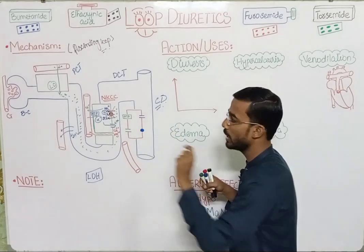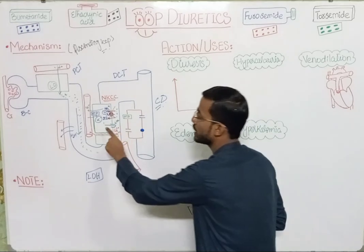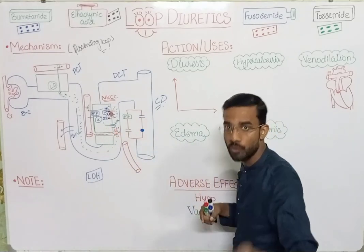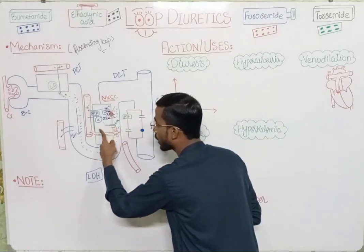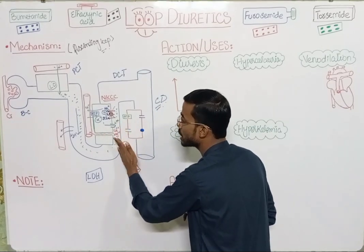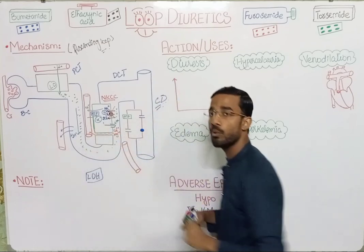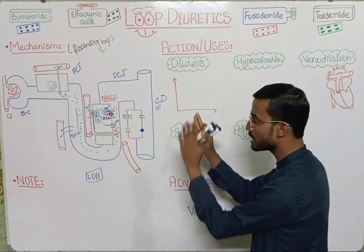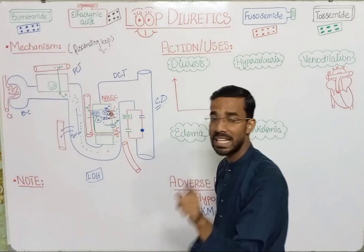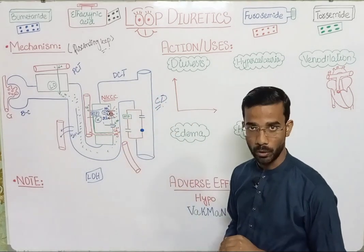When the NKCC transporter is blocked, there is no accumulation of potassium in the cell. If there is no potassium accumulation, potassium will not back-diffuse into the tubule, and therefore calcium and magnesium also cannot move into the blood. If we block this NKCC co-transporter, the whole process is blocked.